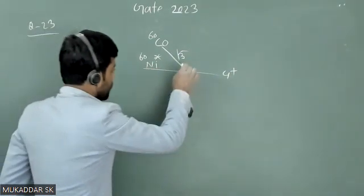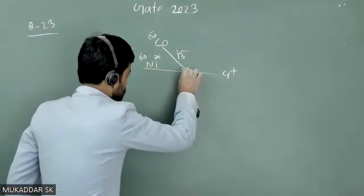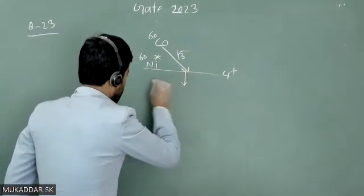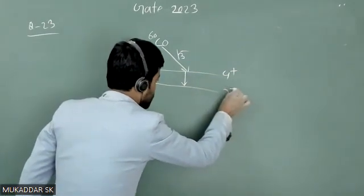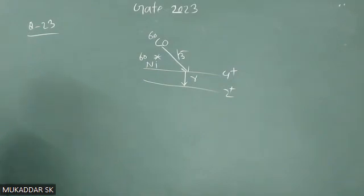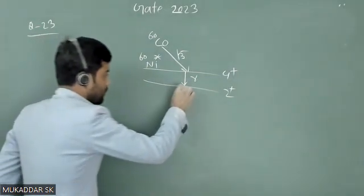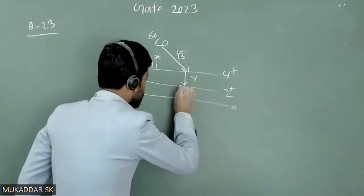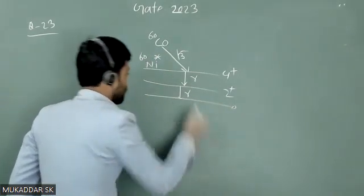This excited nickel is coming to a 2+ state by emitting gamma, and again from 2+ state is coming to 0+ state by emitting gamma.